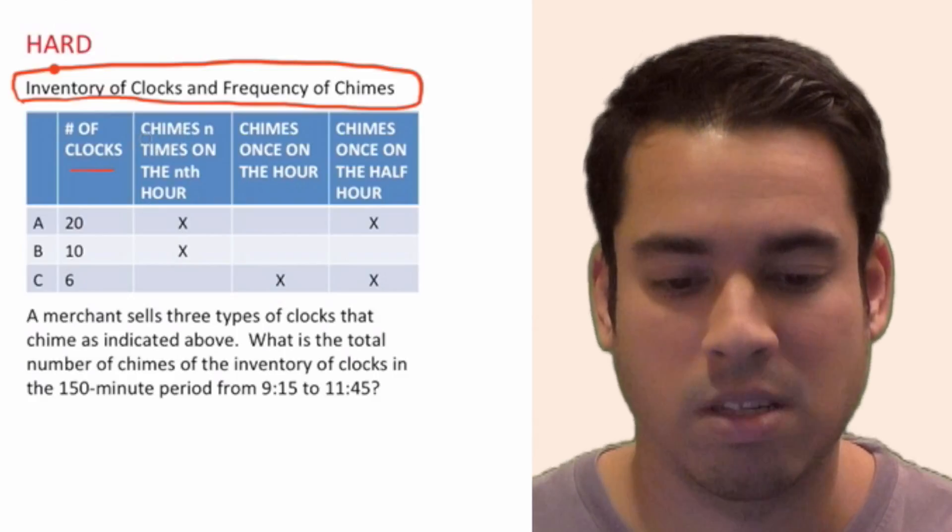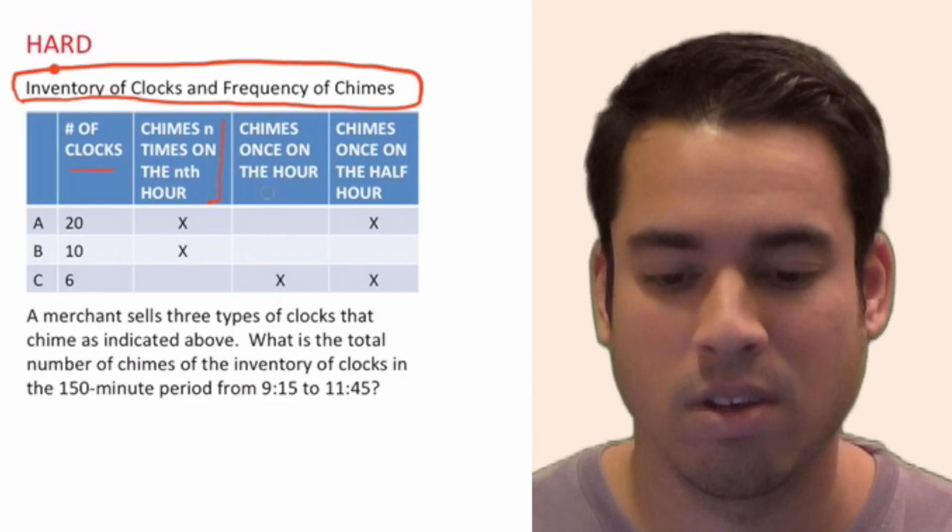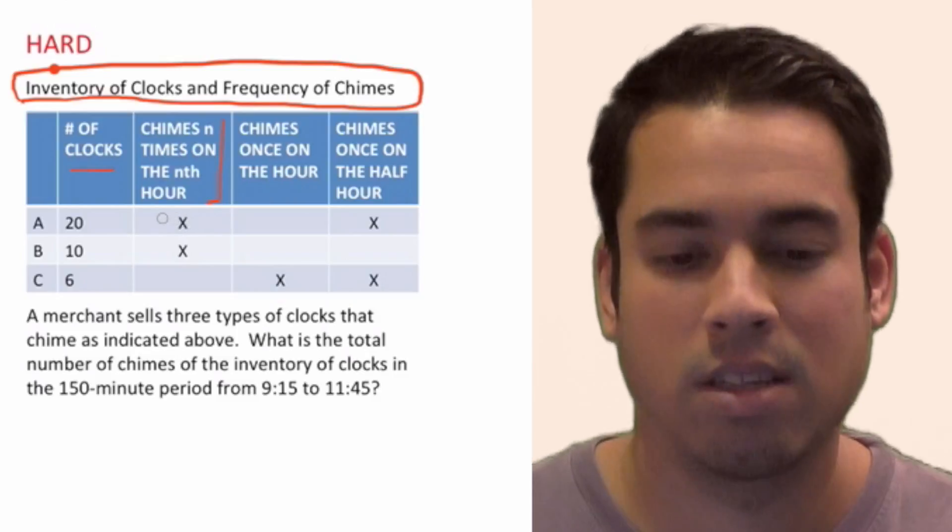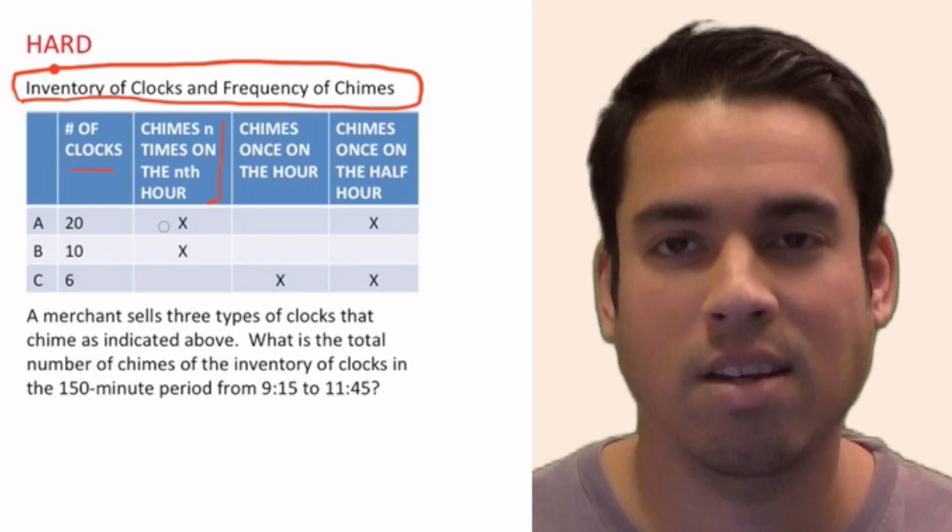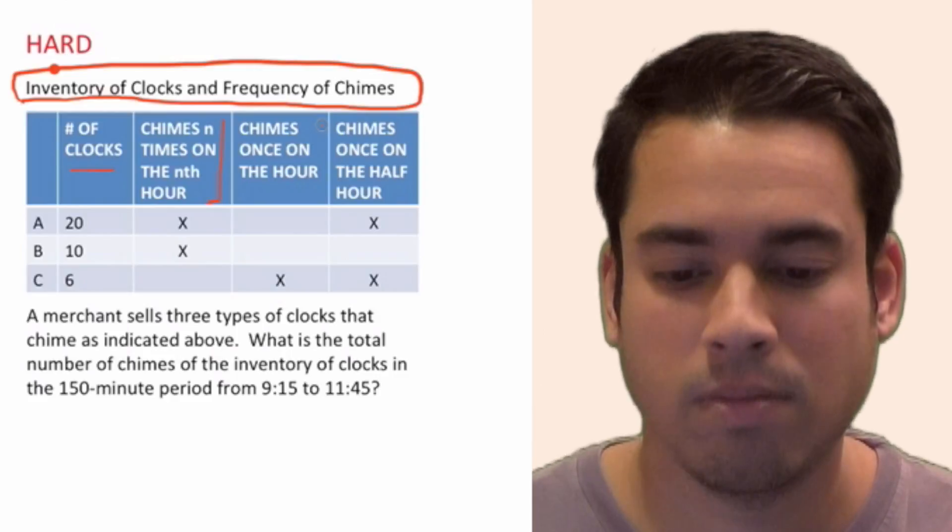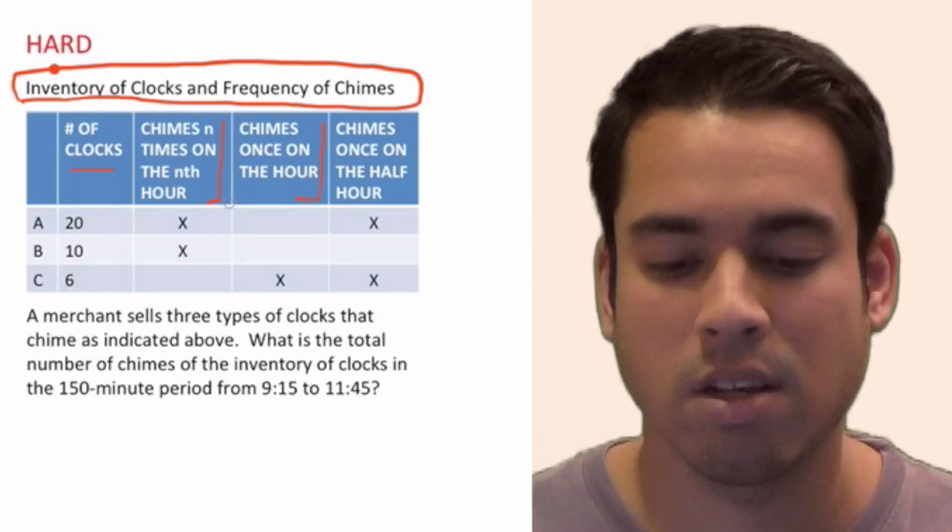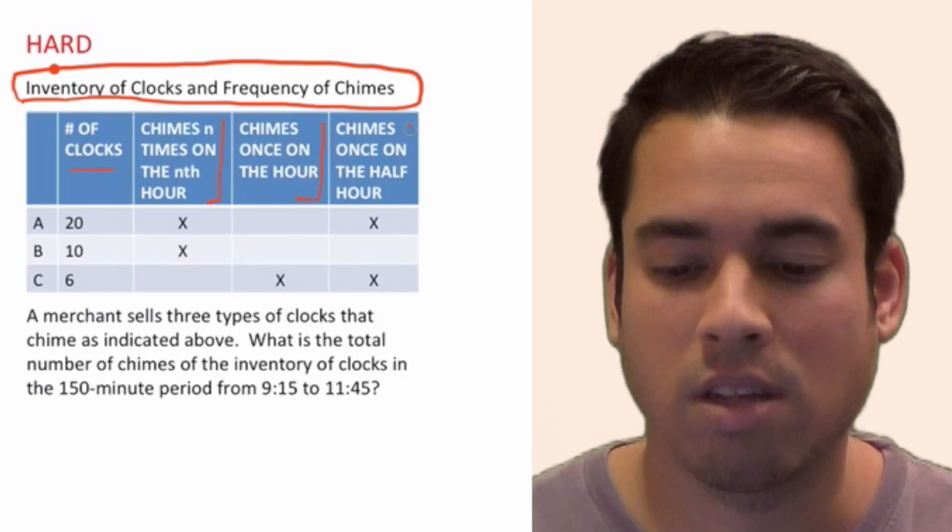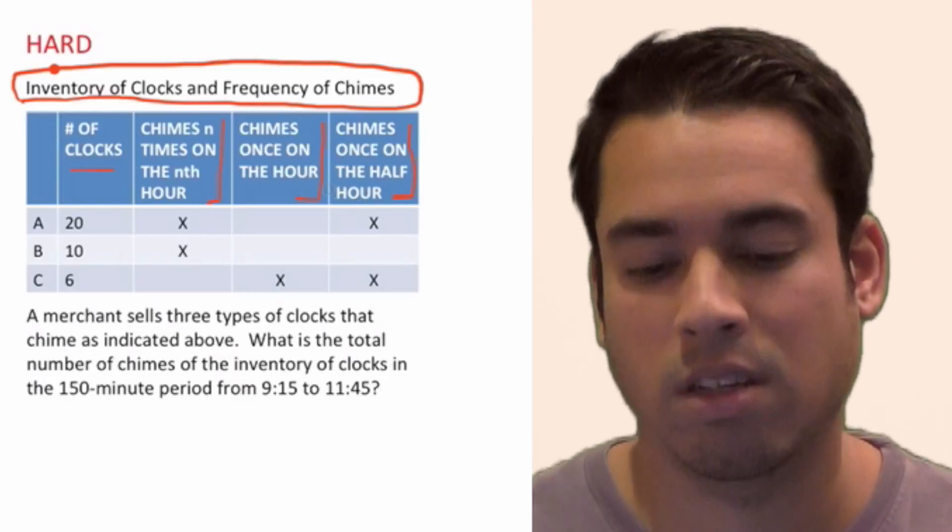Now it gives some specifics on the clocks. This one says it chimes n times on the nth hour. So what I think that means is let's say it's 8 o'clock, that's the 8th hour, and it's going to chime eight times. So at 10 o'clock, it's going to chime 10 times. Chimes once on the hour, it's a little bit easier. So each hour, kind of like those big clocks you see in different cities, they're just going to chime one time. And then this last category, it's going to chime once on the half hour. So every half hour at 7:30, 8:30, 9:30, it's going to chime once.